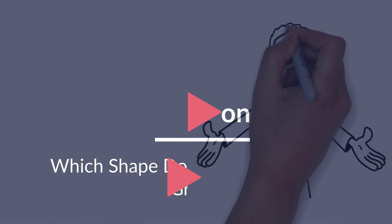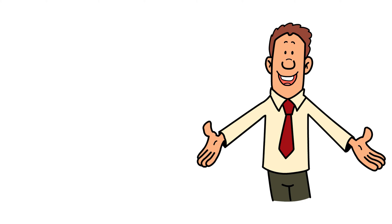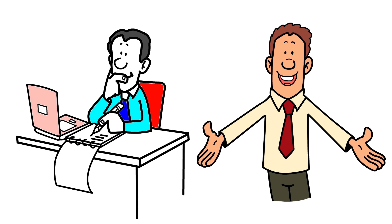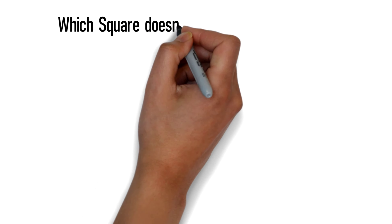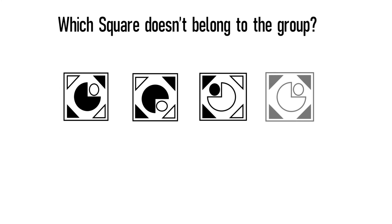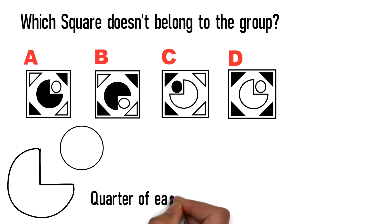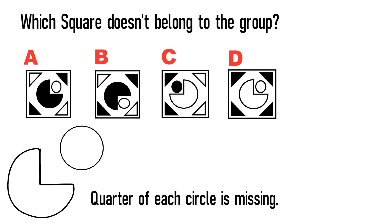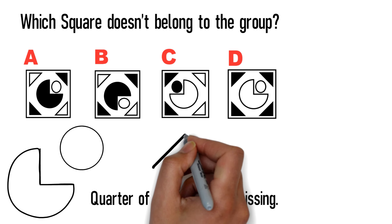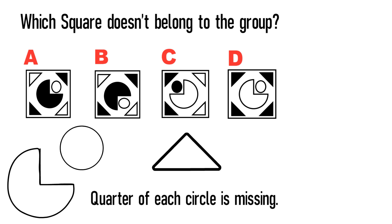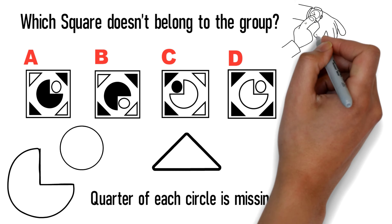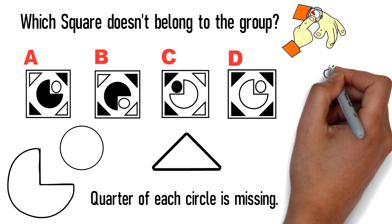In this problem, you need to determine which object does not belong to the group. Specifically, which square doesn't belong? You're presented with four different squares — choices A, B, C, and D. Each square contains two circles inside; in the large circle, a quarter of each circle is missing and replaced with a small circle. All squares also have triangles in the corners.